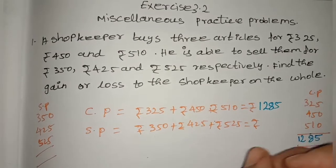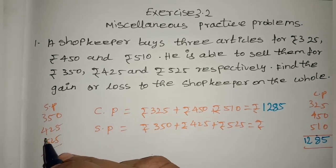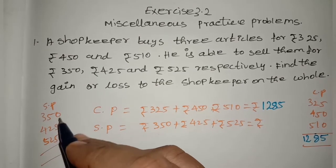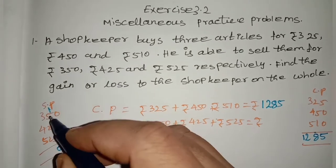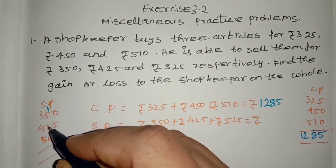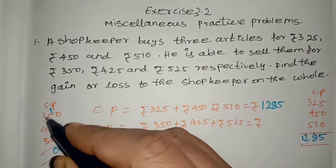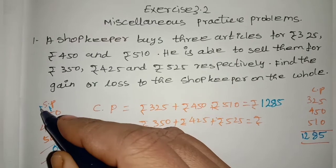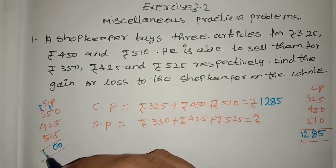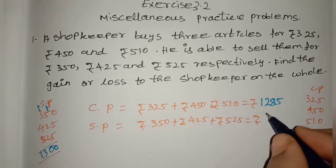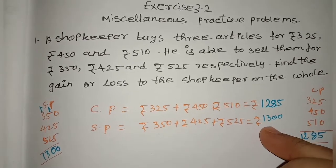The selling price is 350, 425, and 525. Adding them: 5 plus 5 is 10, write 0 and carry 1. 5 plus 1 is 6, 6 plus 2 is 8, 8 plus 2 is 10, write 0 carry 1. 3 plus 1 is 4, 4 plus 4 is 8, 8 plus 5 is 13. Total selling price is 1300.